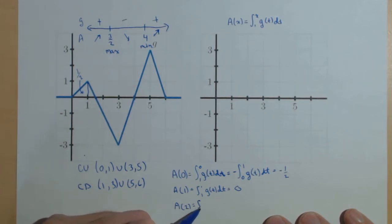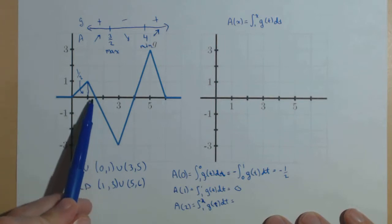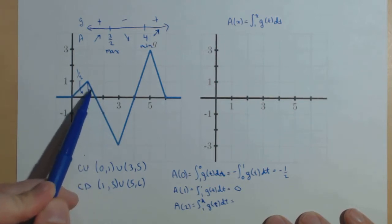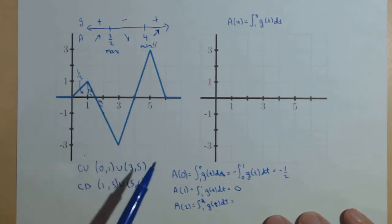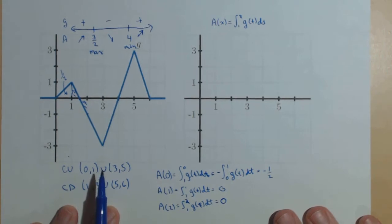A of 2 is the integral from 1 to 2 of g of t dt. And now, we're going to start seeing the accumulation buildup. From 1 to 2, there's as much area above as there is below, so we're going to get a net change of 0. No change in displacement.